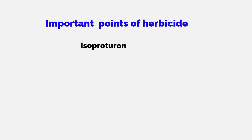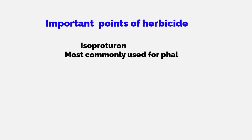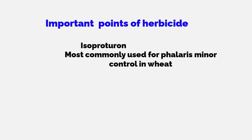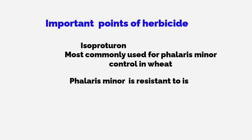Isoproturon is most commonly used for the control of Phalaris minor. However, due to continuous use of isoproturon for control of Phalaris minor, we are now finding that Phalaris minor is reporting resistance toward isoproturon.